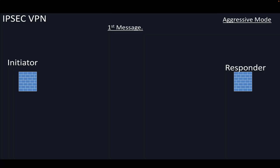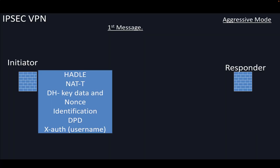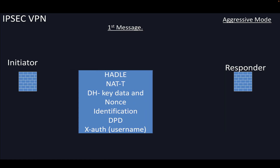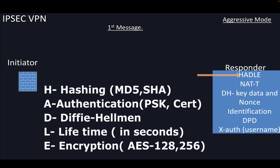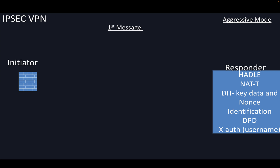We have an initiator and a responder. The initiator sends the first message to the responder. In this message we have HANDLE: H is hashing, A is authentication, N is... D is Diffie-Hellman, L is lifetime, and E is encryption. All this information goes in the first message.